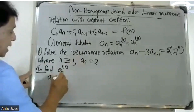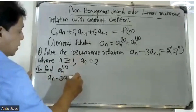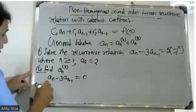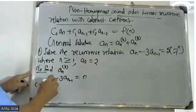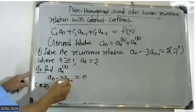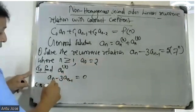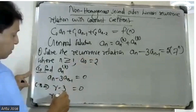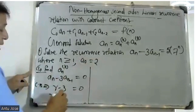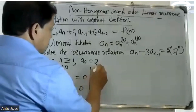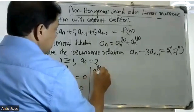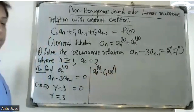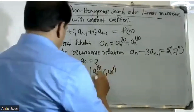For the homogeneous part, set a_n minus 3·a_{n-1} equal to zero. The characteristic equation is r minus 3 equals zero, giving r equals 3. So the homogeneous solution is a_nh equals C1 into 3^n.